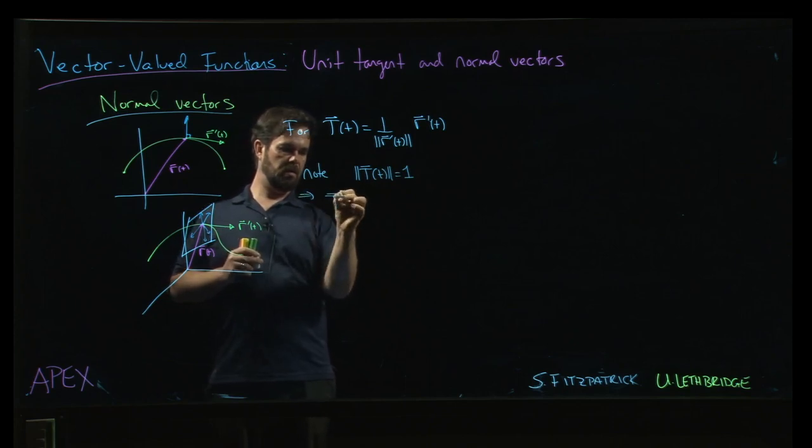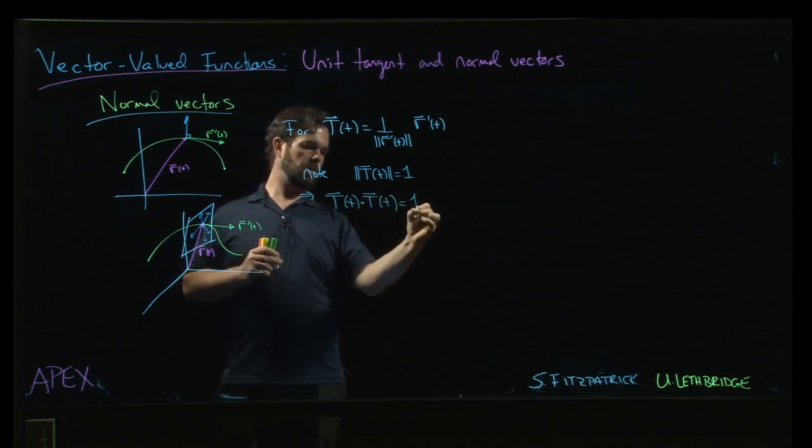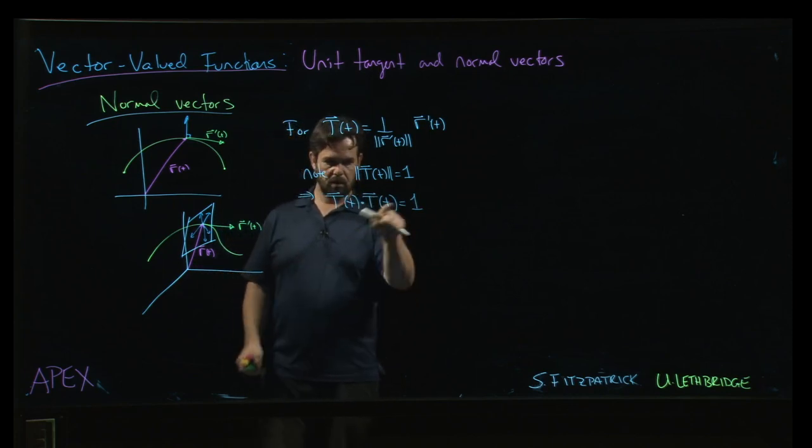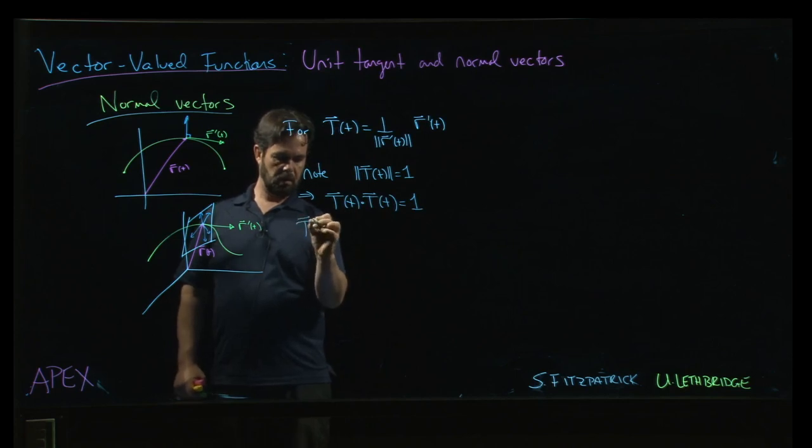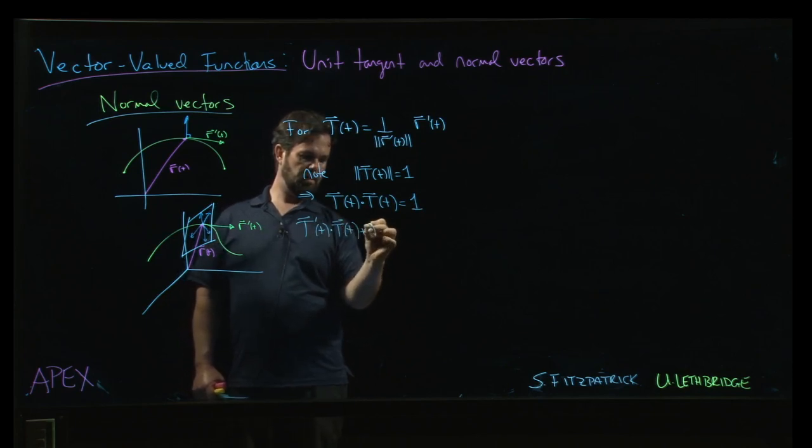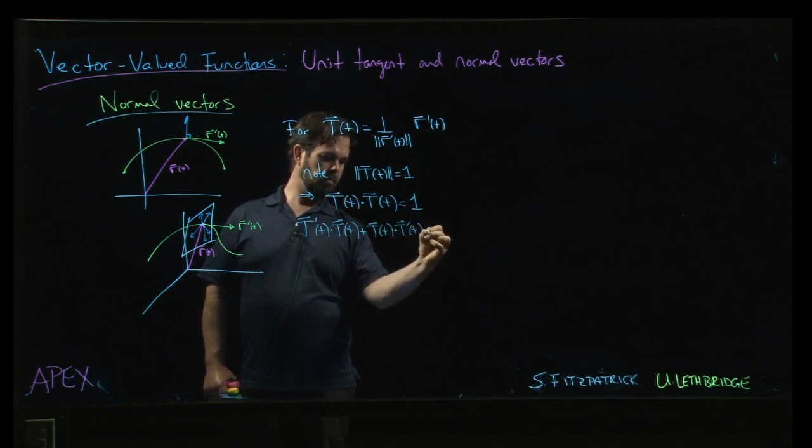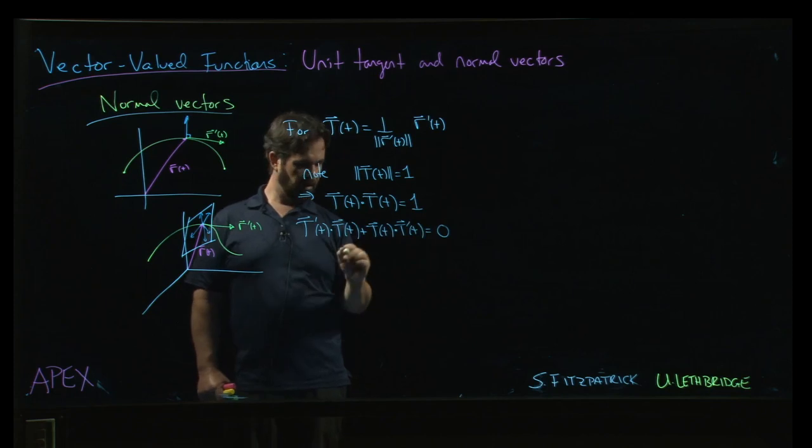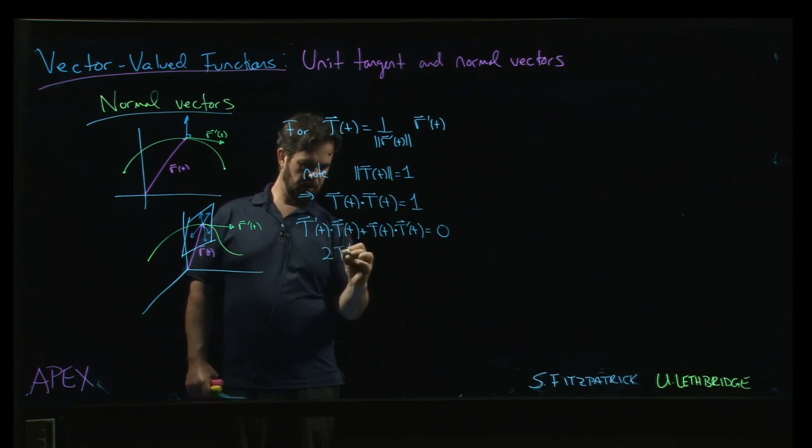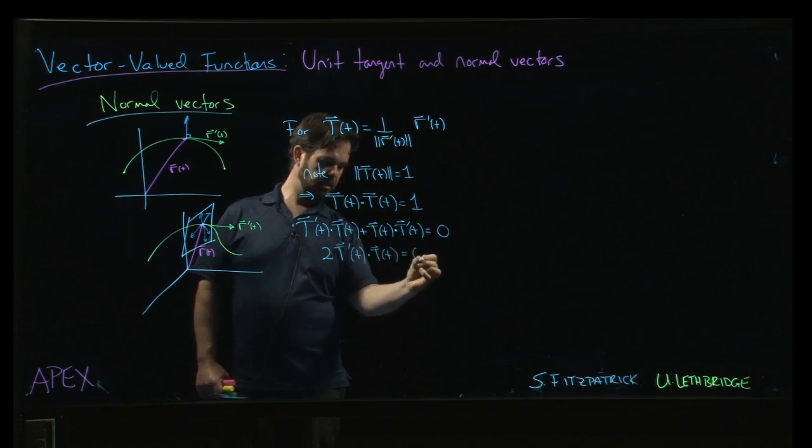Well, that means that this vector dotted with itself is 1. Now, if you take the derivative of both sides of this equation using the product rule for derivatives, you're going to get t prime of t dotted with t plus t dotted with t prime. And of course, on the other side, you get 0 because it's a constant. But dot product is symmetric, so this is just 2 times t prime dotted with t, and that should be equal to 0.